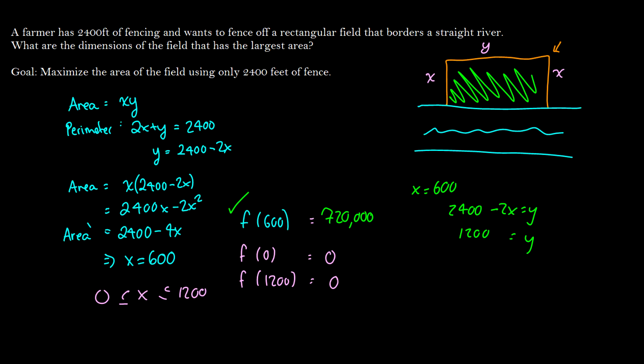So the dimensions of our perimeter here should be 600 by 1200, of course by another 600 on the side. So that will maximize our area. So we have x is equal to 600, y is equal to 1200. So this is one type of problem you can do.